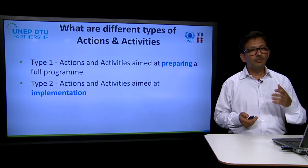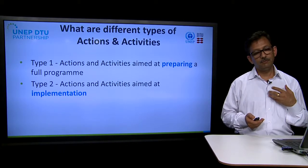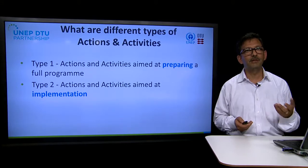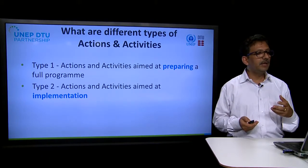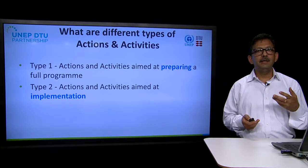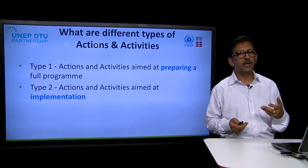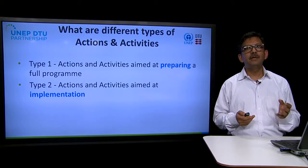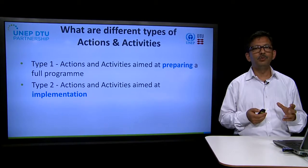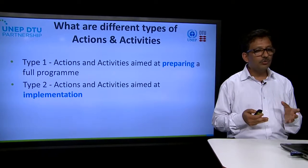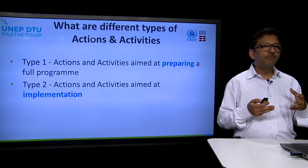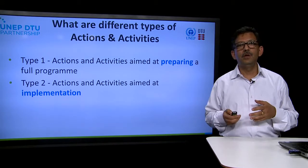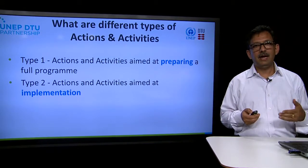Coming to the issue of putting budgets for the activities and looking into funding sources, it is important to understand that actions and activities could be of two types. In the TAP guidebook, these are divided into type 1 and type 2. Type 1 actions or activities are those which are basically aiming at preparing a full program, whereas type 2 activities are those which are concerned with the implementation of the actions and activities.